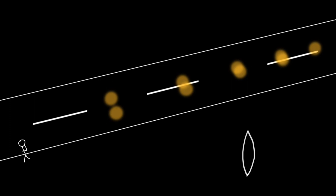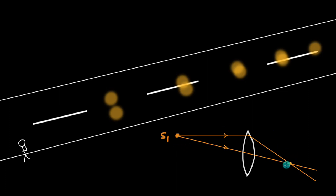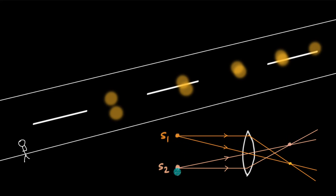We learned in Ray Optics that we get a point image for a point source. So if there is a source S1, there will be an image of S1, and if there is a source S2, there will be an image of S2, just like the two headlights of a car. These two images should be formed on the retina and we should be able to clearly identify them as two separate sources. But we can't. Ray Optics cannot really explain this, but Wave Optics can.